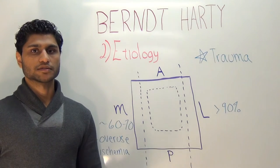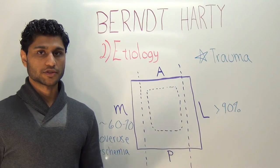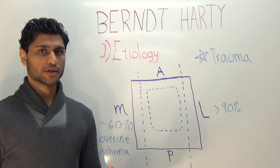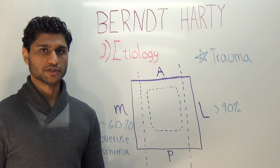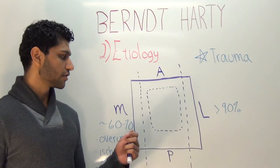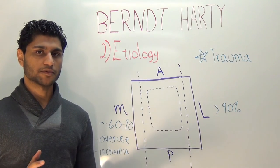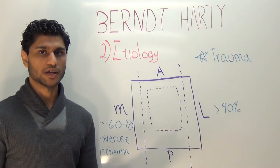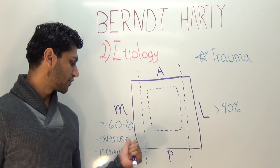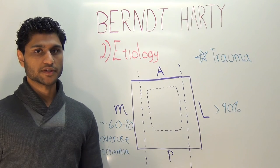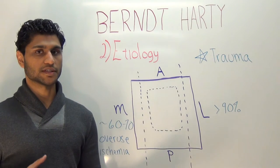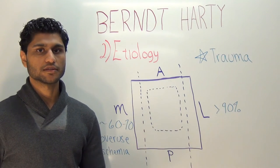The most common cause of either medial or lateral lesions is trauma. Because the lateral dome has the thinnest cartilage, almost all lateral lesions are associated with acute trauma — well over 90% of the time. For medial lesions, because the cartilage is a little thicker, about 60–70% are associated with acute trauma. The remaining 30–40% are associated with other causes such as repetitive overuse stress or vascular insufficiency leading to osteonecrosis. So if you're ever taking an exam and the question stem mentions ischemic etiology, think medial lesions.